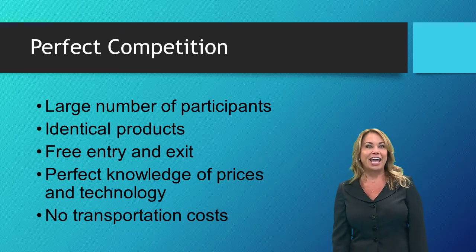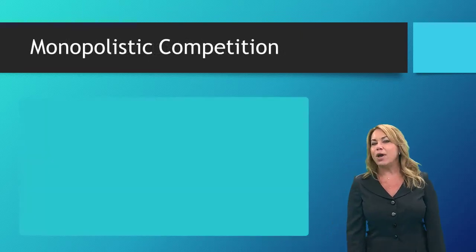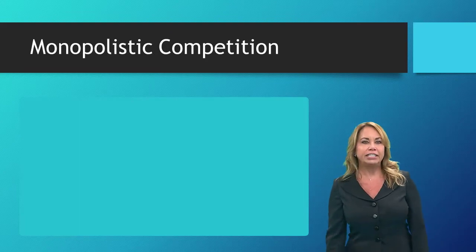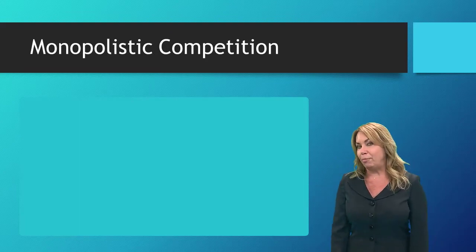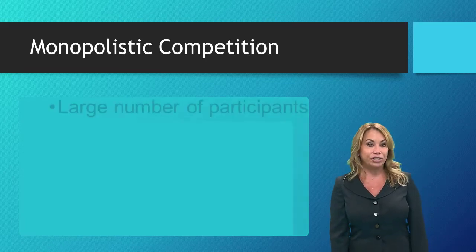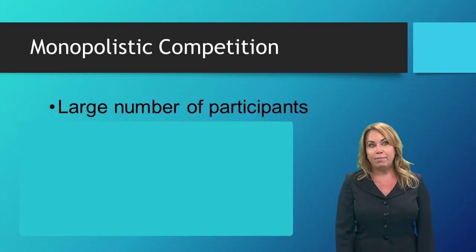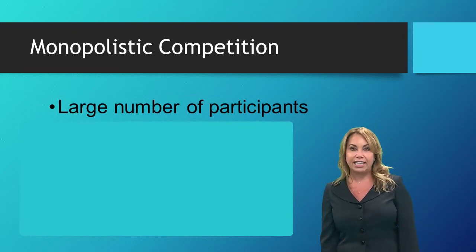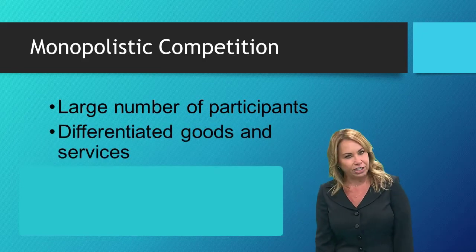Next let's take a look at monopolistic competition. In reality, this is the most typical type of competition that we see in industries. Monopolistic competition is still characterized by a large number of participants in the market; however, the main difference is that their goods or services can be somewhat differentiated — meaning they have something different or unique to their product.